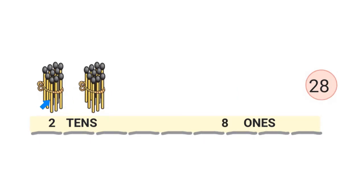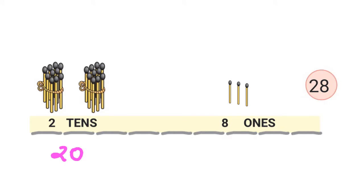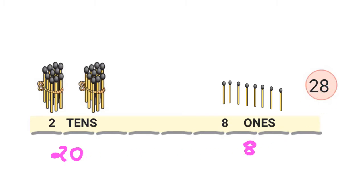Here I have 2 tens — 2 tens is 20 matchsticks — and here I have 8 ones. Let me draw 8 ones: 1, 2, 3, 4, 5, 6, 7, 8. I have 8 ones. So 20 and 8 — 28 matchsticks in all.